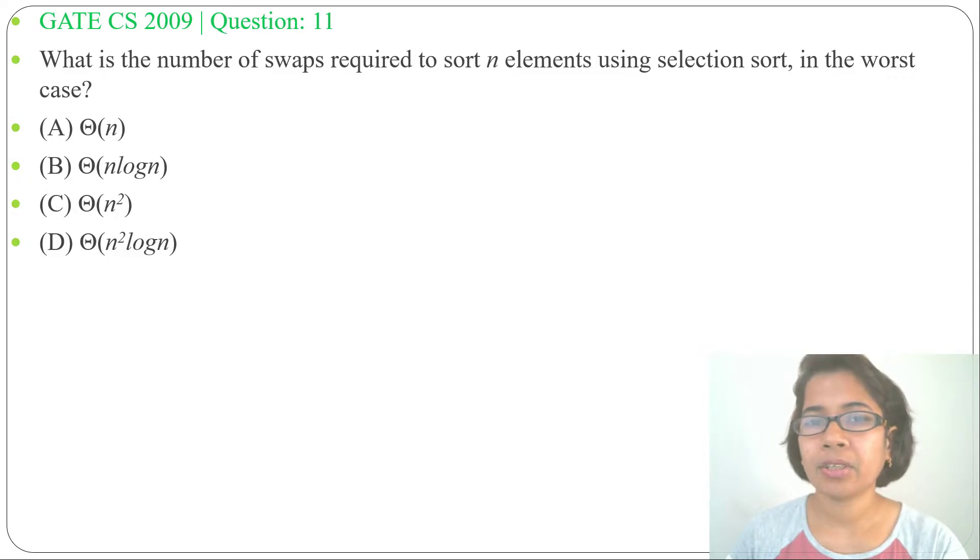I already discussed selection sort, just go through that. You can easily solve this question. In selection sort, we are selecting the minimum element and then swapping it with its position. First we'll select the first minimum element, that will swap with the first position. Next, in the second iteration, we'll choose the second minimum element and that will swap with the second position. Next iteration, we'll choose the third minimum element and that will swap with the third element.